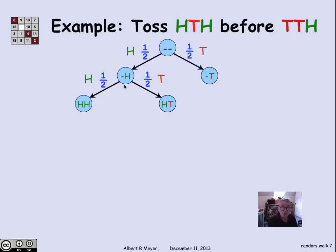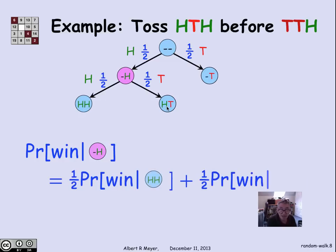This structure of the state diagram tells us that if I want to know the probability of winning given that I flipped exactly one head at the start, the probability is simply by total probability, the probability of winning from HH weighted by a half, and the probability of winning from HT weighted by a half. And I wind up again with a simple linear equation that connects the probability of winning in one state with the probability of winning in the states that it goes to.